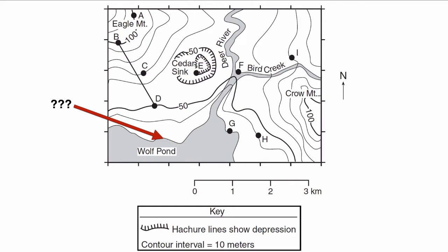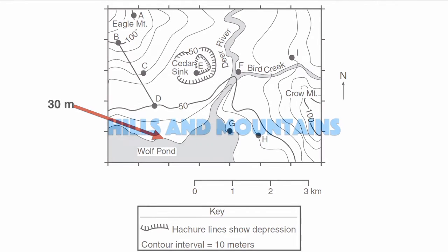Let's look at another example — a pond. Ponds are a lot like lakes; same situation. They can be at any elevation. We want to know what is the shoreline elevation in this pond. We have a contour interval of 10 meters and an index contour of 50. That means if I'm starting at the shoreline, it's got to be equal to 30 meters — 30, 40, 50. So I'm starting at 30.